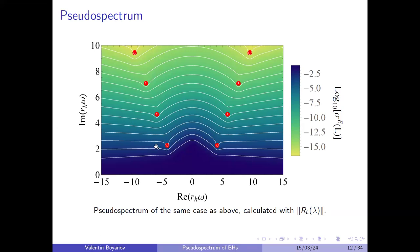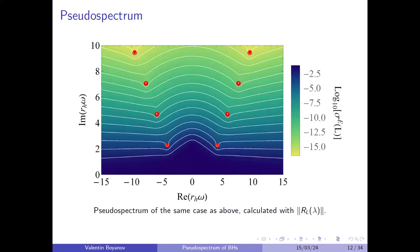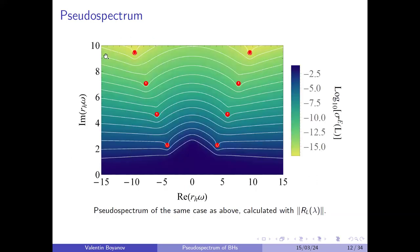This is indicative of spectral instability. For this plot, we calculated the resolvent norm on a very dense grid of points in the complex plane. The color shows the magnitude — actually the inverse — of the resolvent norm, and the white lines are level sets of constant resolvent norm corresponding to the boundaries of epsilon pseudospectral regions.